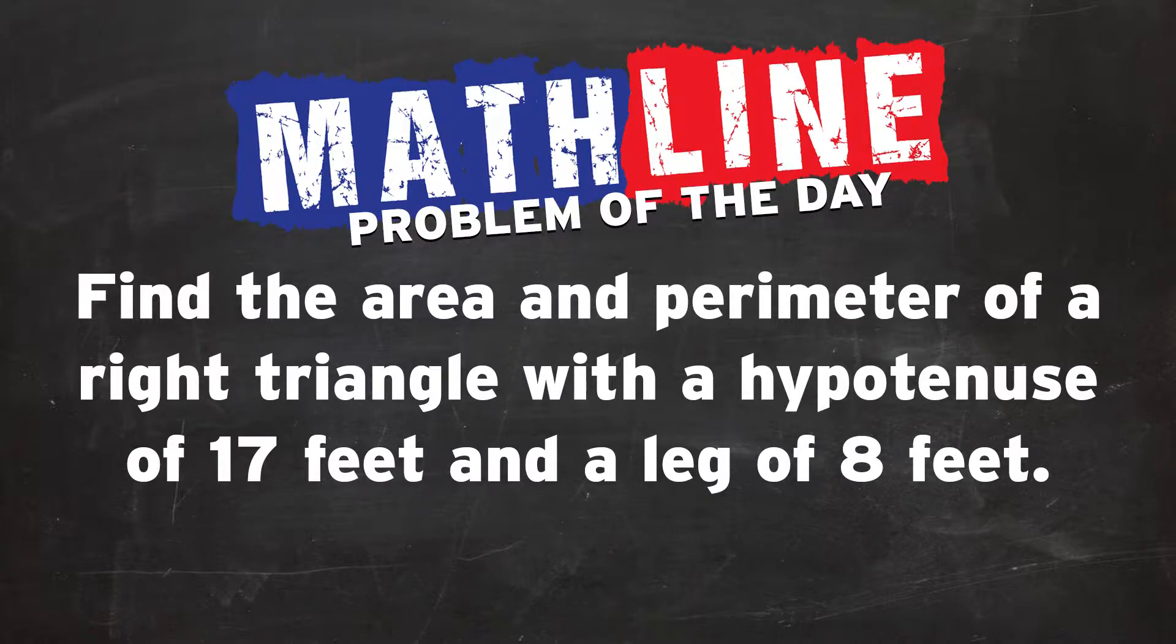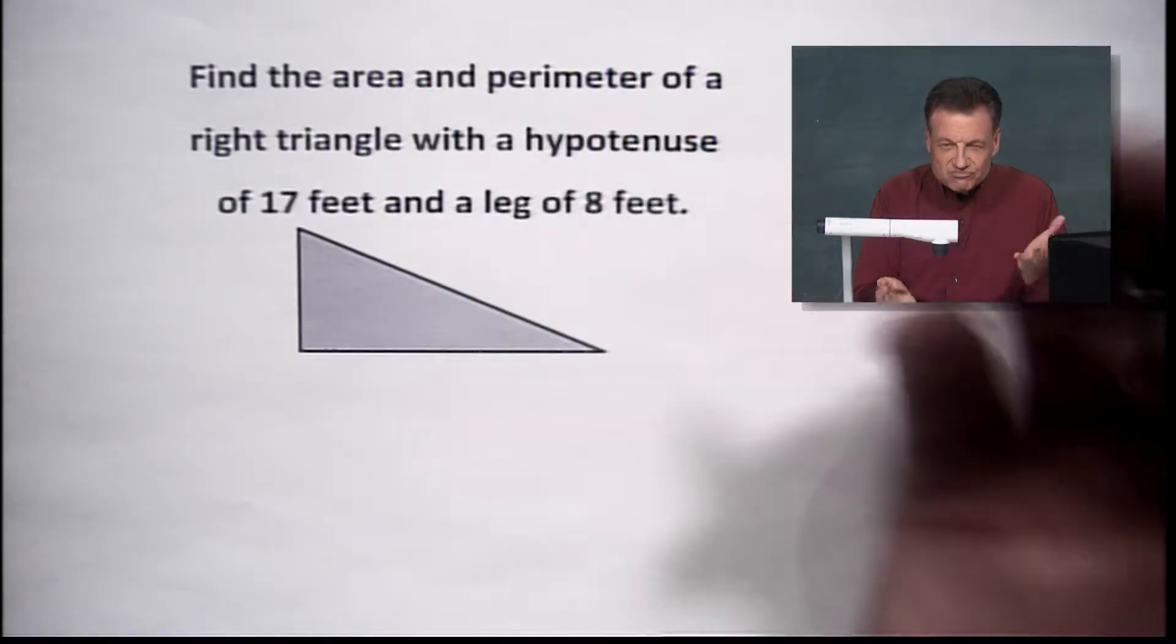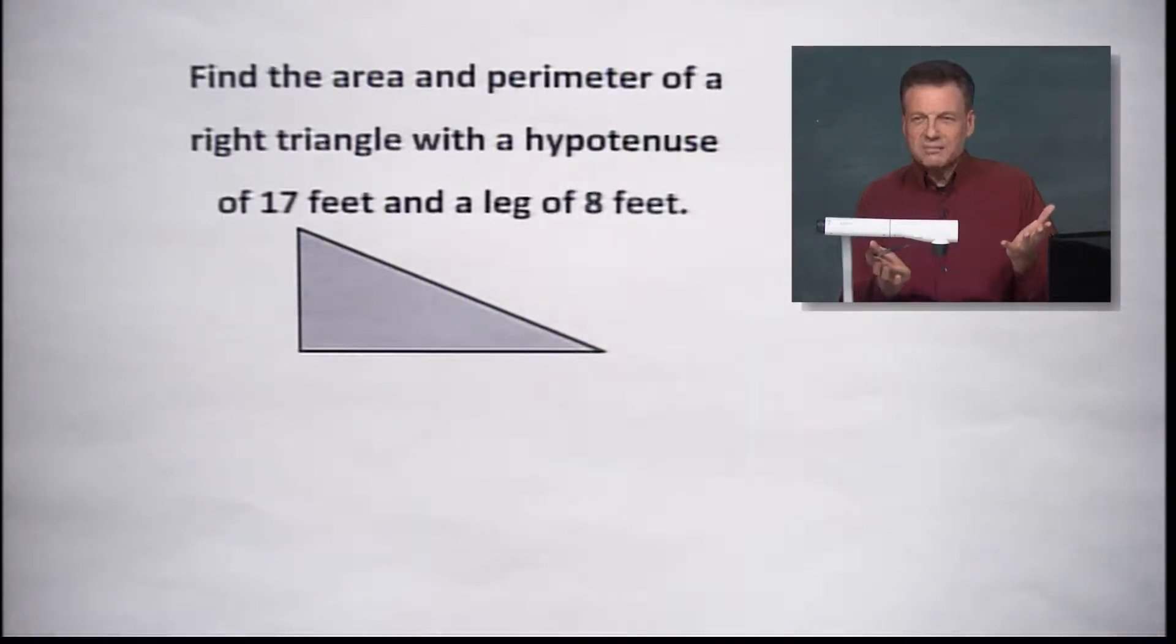So we're going to be looking at a right triangle, finding the area, the perimeter, and the hypotenuse - all sorts of terminology. We've got to make sure we understand what's going on here. That's a right triangle, first of all.